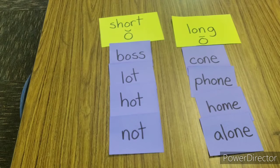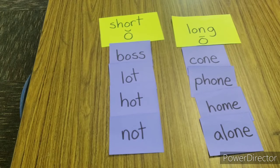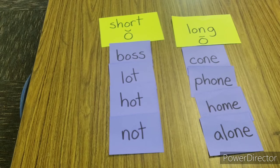So now what I want you to do at home is take a paper or a whiteboard, draw a line down the middle, and sort these words into long O and short O words.